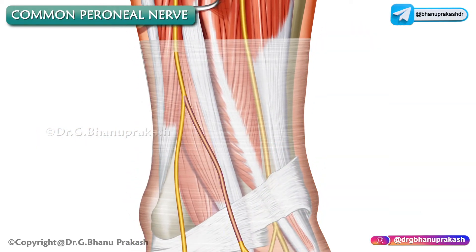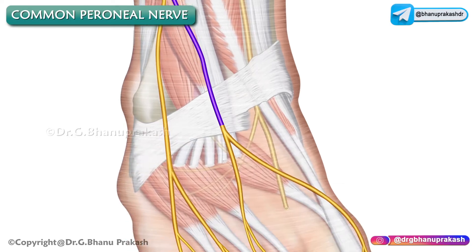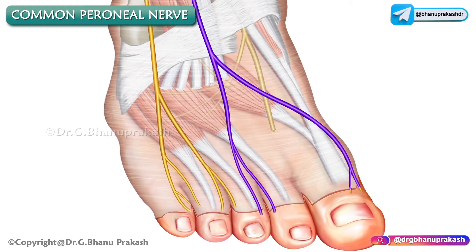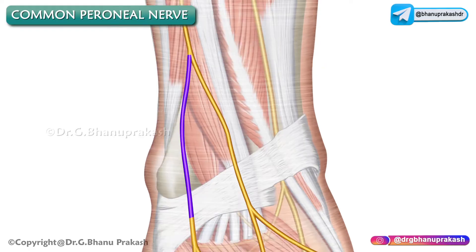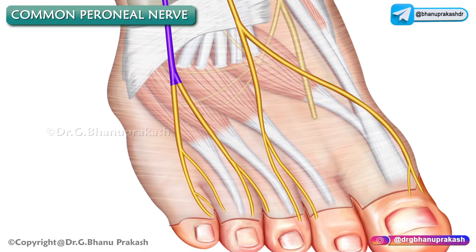The superficial peroneal nerve divides into medial and lateral terminal branches. The medial terminal branch divides into two dorsal digital nerves — one on the medial side of the big toe and one for the second interdigital cleft. The lateral terminal branch also divides into two dorsal digital nerves, supplying the third and fourth interdigital clefts.